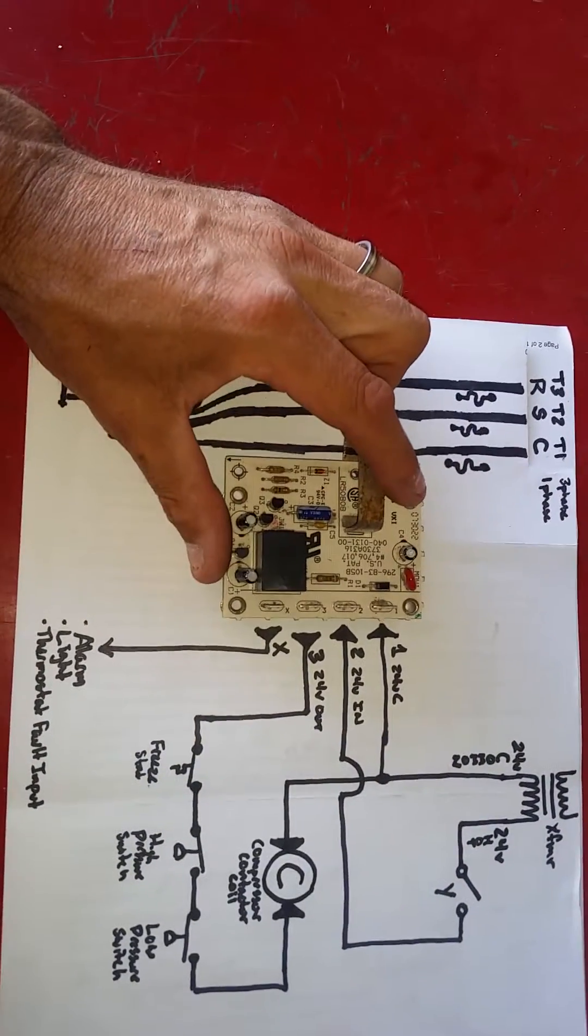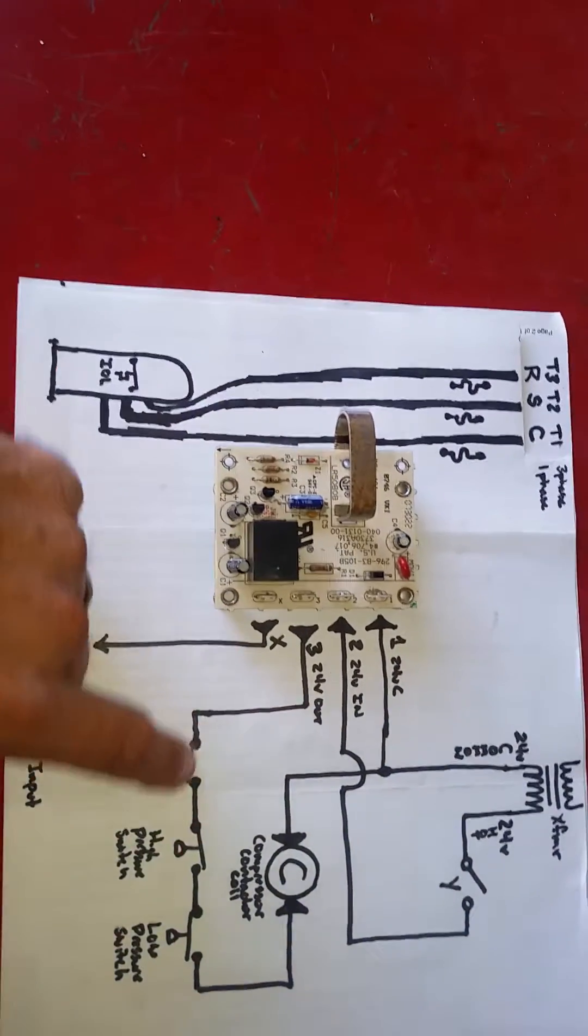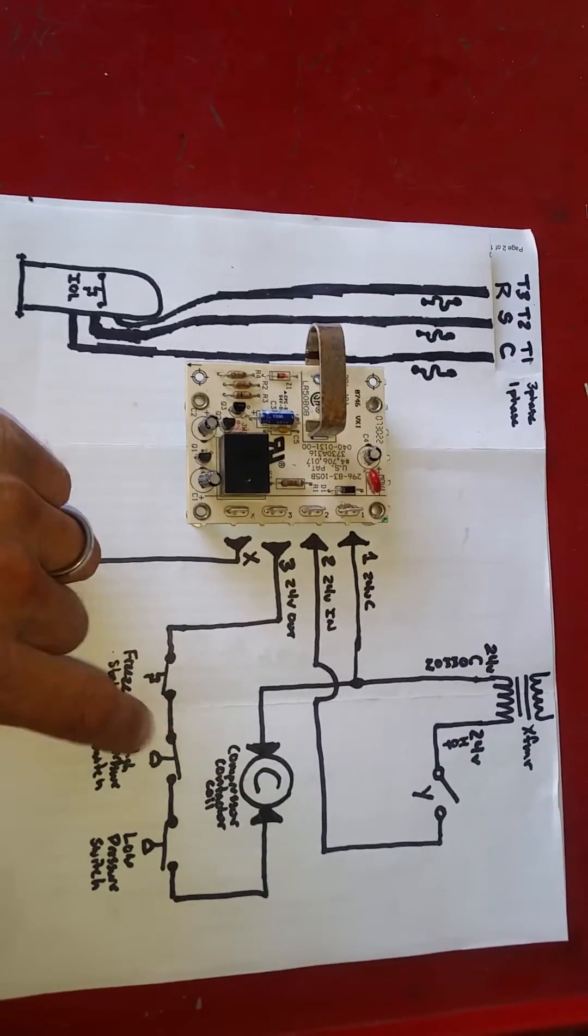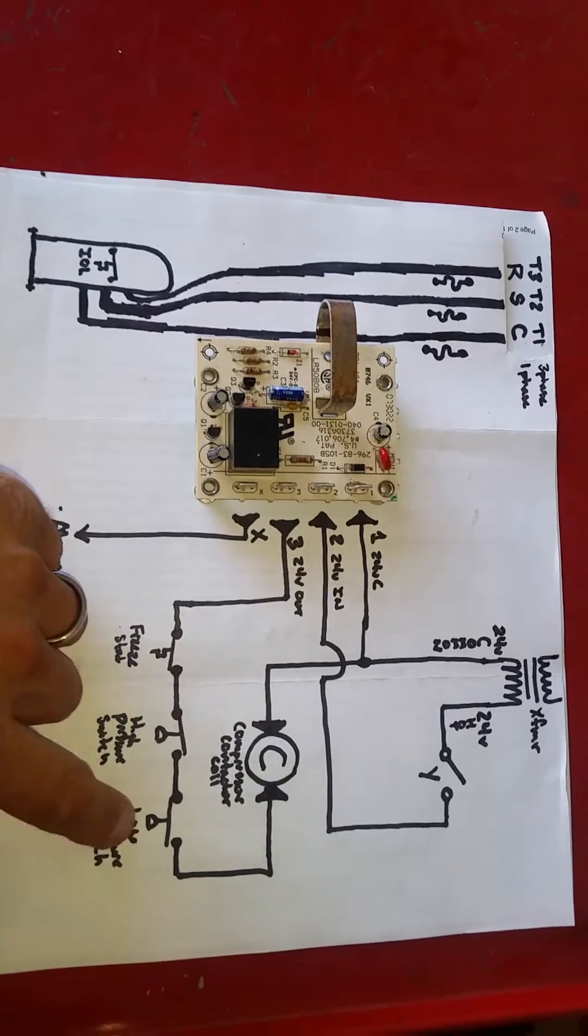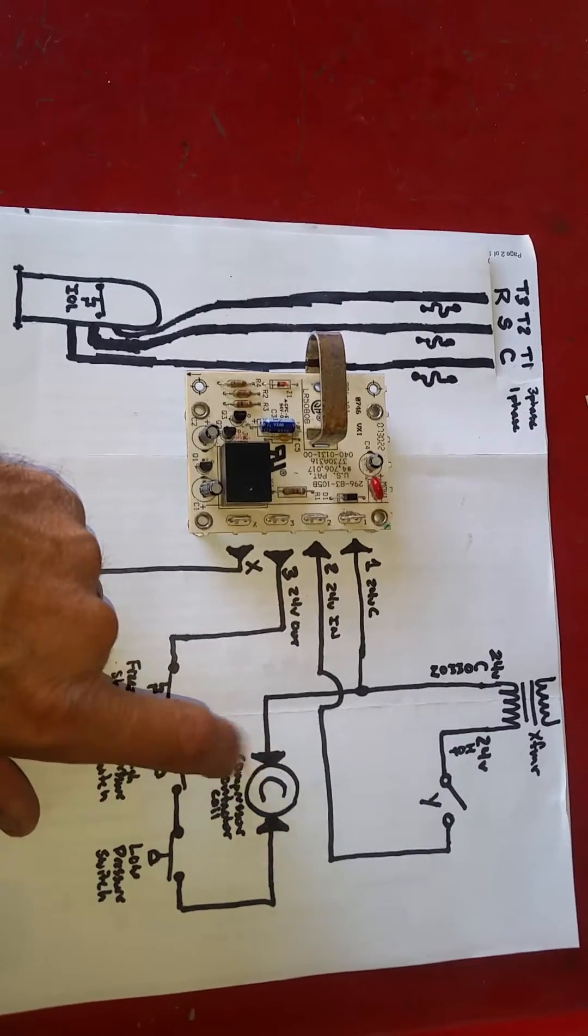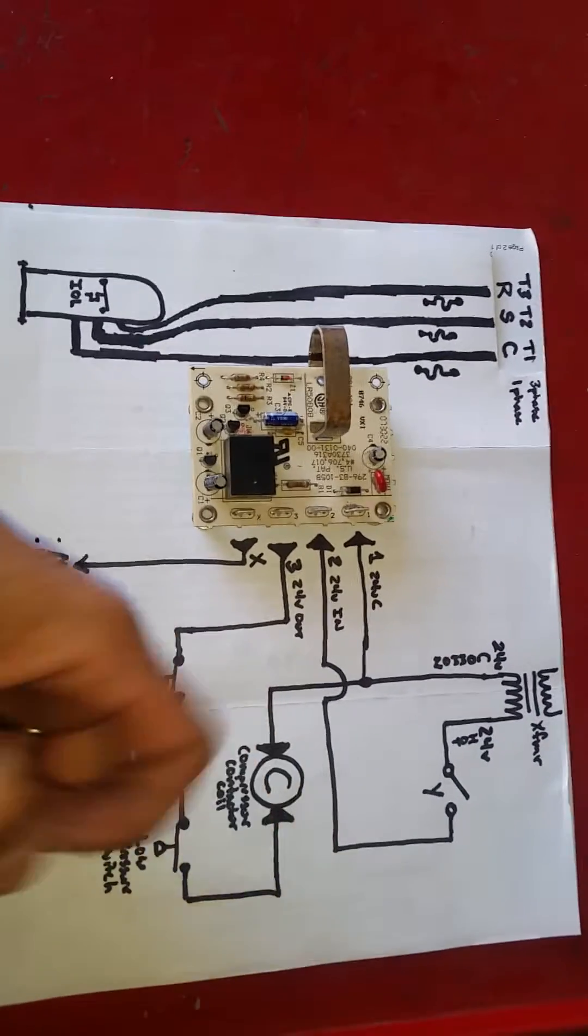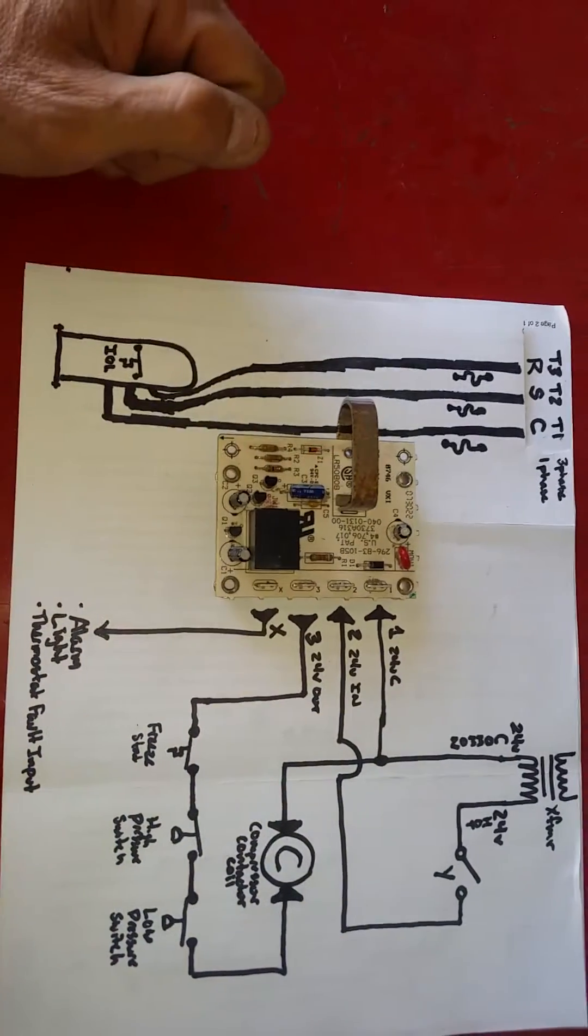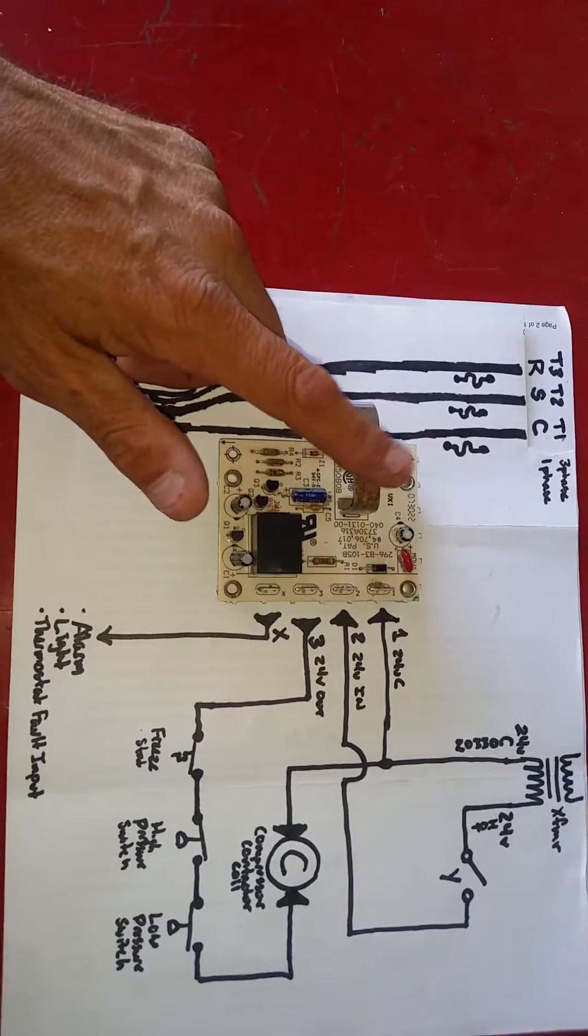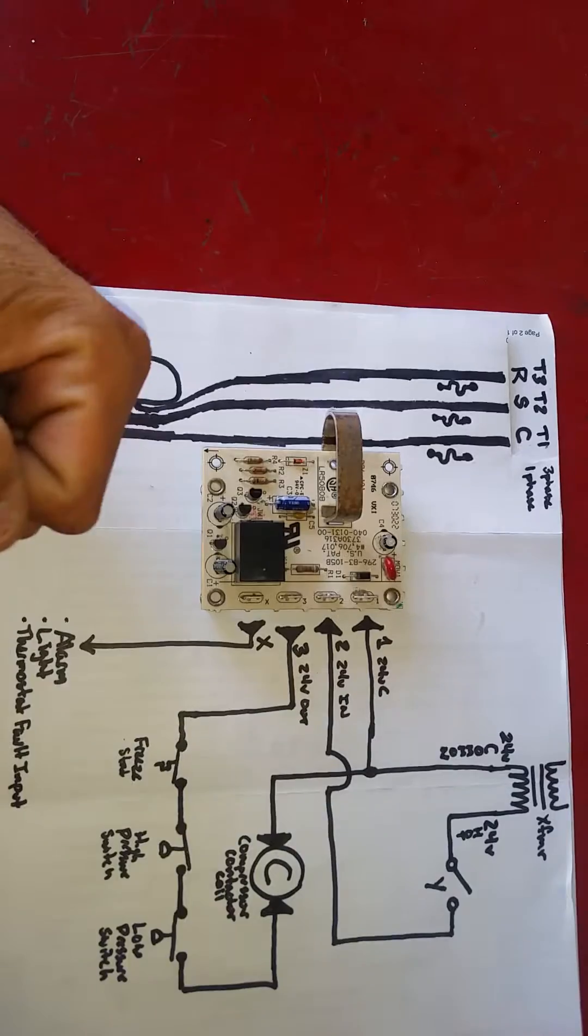The reason why I call this a current lockout is because everything relies on current. It has nothing to do with the safeties. If a safety was to open, whether or not the freeze stat, a high-pressure switch, or a low-pressure switch was to open, all it's doing is killing the 24 volts to the compressor contactor. Because the compressor contactor opens, we no longer have current at our compressor. And because we have no current, we drop below that 0.5 amp threshold. The current sensor recognizes that and opens that relay and kills power to the entire system.